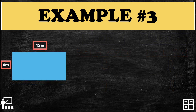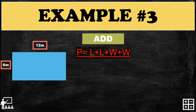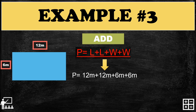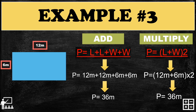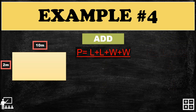Let's try another example where the width is 6 meters and the length is 12 meters. Using the addition formula: 12 + 12 + 6 + 6 gives you 36 meters. Or using the multiply formula: 12 + 6 = 18, multiplied by 2, also gives you 36 meters.